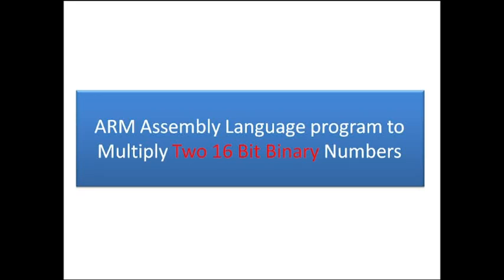Hello folks, today we will see how to write an ARM assembly language program to multiply two 16-bit binary numbers. I have referred to many YouTube tutorials on this, but most of them have multiplied either two 16-bit decimal numbers or two 16-bit hexadecimal numbers. But how actually to execute this task in the right way? Let us explore that in this video.